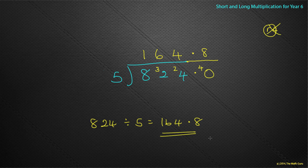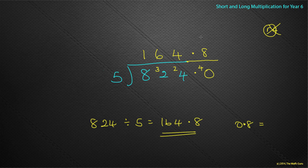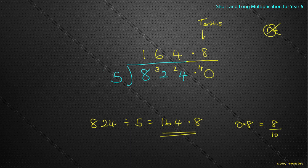What does the 0.8 mean? Well, hopefully you're remembering that is the same as 8 tenths, because this column here is my tenths column. So 0.8 can be written as 8 tenths.